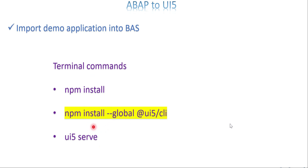One more thing: this may happen in your BAS trial account for the first time — when you run ui5 serve, it gives an error saying ui5 is not recognized or not a command. The solution is to run this command once before using ui5 serve for the first time: npm install -g @ui5/cli. This is a one-time activity. Once you run it, ui5 serve is recognized and your application opens in a new window.